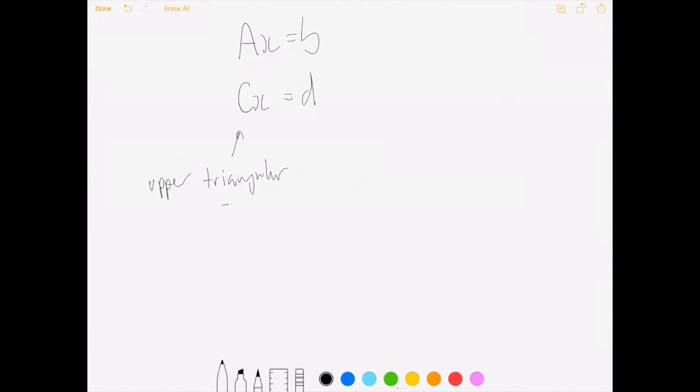So remember upper triangular means that our matrix looks like that. The diagonal's there. Everything on or above the diagonal is arbitrary. Everything below the diagonal is zero.